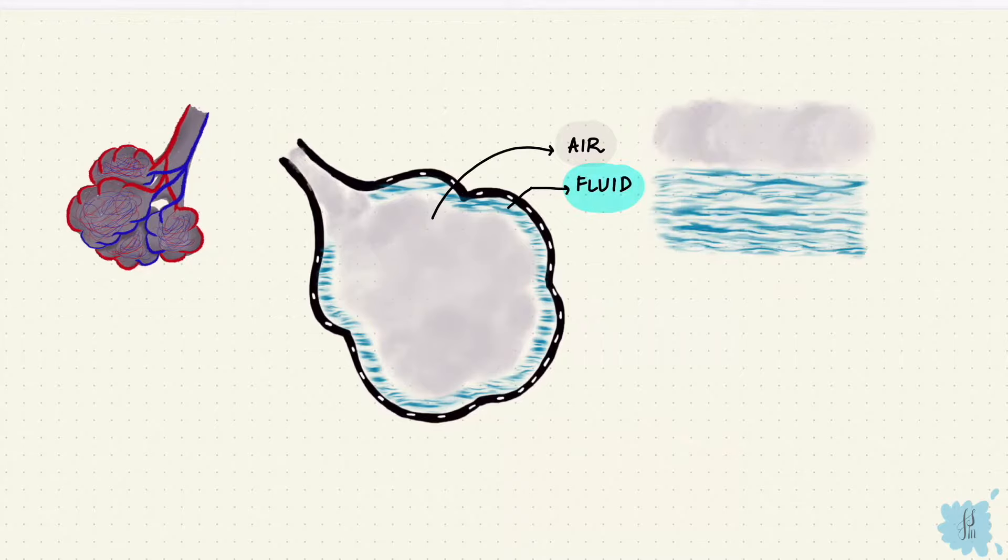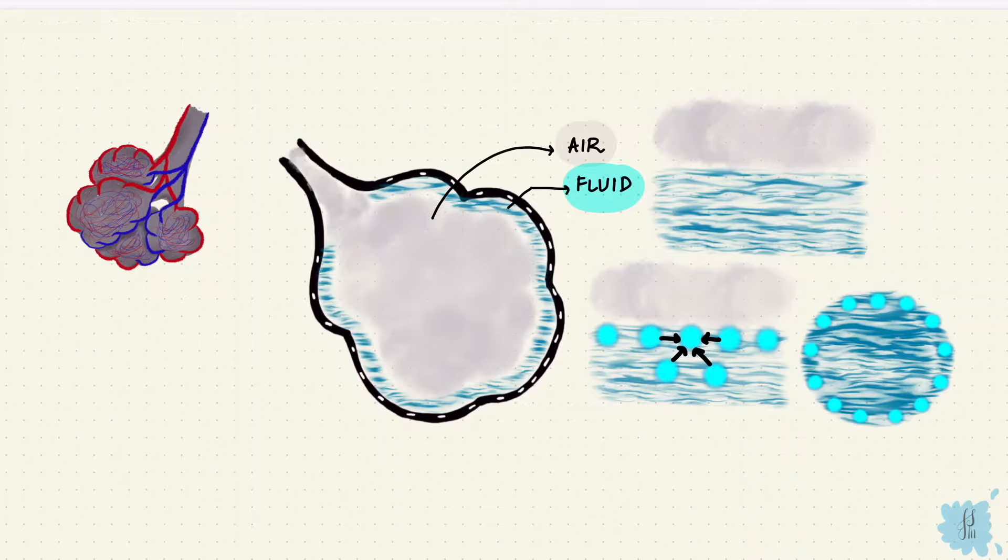Whenever air and fluid come into contact like this, the water molecules that are on the surface attract each other and they try to form a small structure, a sphere. This is the same thing that happens with the raindrop; that air-water interface creates that shape. So this creates tension and that is called surface tension because it's tension at the surface.